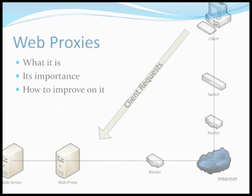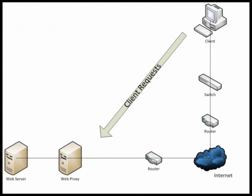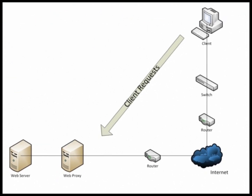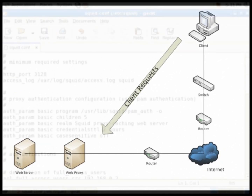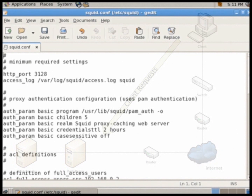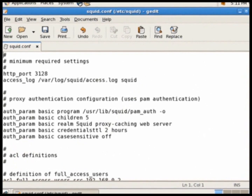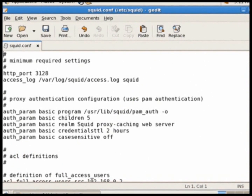A Web Proxy is an application or computer system that acts as the middleman for our client. It takes the client's request, compares it to its filtering rules, and then applies new header information to the packets so it can send them out.